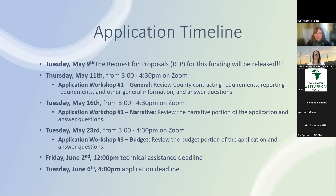Following the application deadline, we do a process where a project review committee — community members who come together — score the applications and make recommendations for funding. That will probably happen in late June, and awards will be announced after that. We're hoping for an August 1st contract start date, and we're going to be working with folks who are awarded in July and August to finalize contracts.